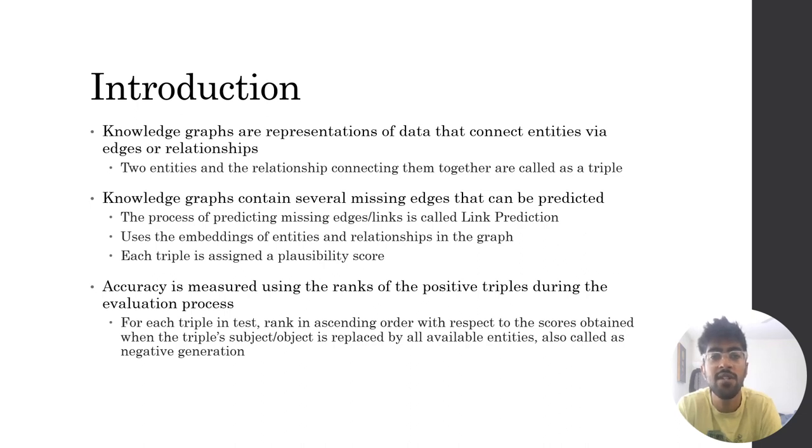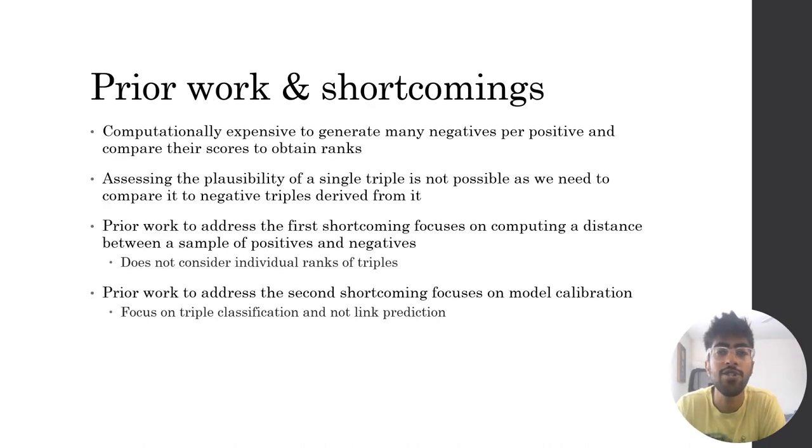The accuracy for link prediction evaluation is measured using the ranks of positive triples during the evaluation process. For each triple, the rank is in ascending order with respect to the scores obtained when the triple's subject or object is replaced by all available entities, and this process is also called negative generation.